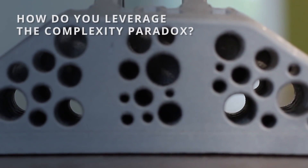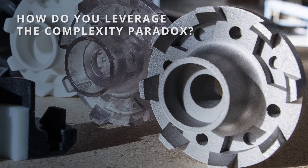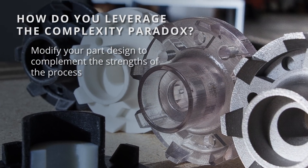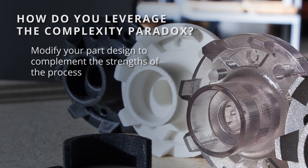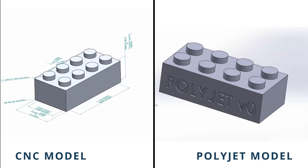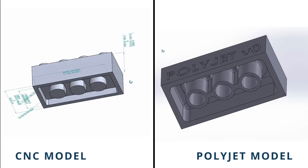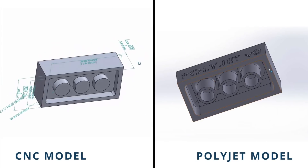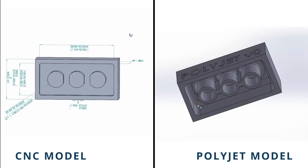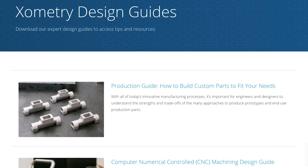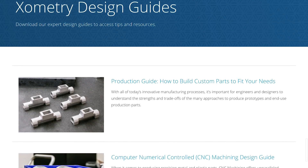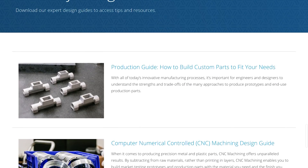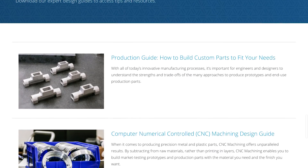So how do you take advantage of the complexity paradox when deciding how to design for 3D printing? At Geometry, we recommend modifying your designs to the strengths of the process. A common mistake is assuming you can use the same custom part geometry for 3D printing as you do for CNC machining. We recommend developing a keen understanding of designing for 3D. We have many resources, including our fused deposition modeling and selective laser sintering design guides, available to download online.